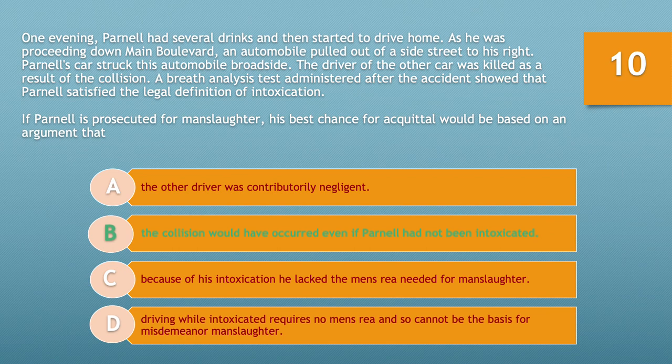If you chose option B — the collision would have occurred even if Parnell had not been intoxicated — you'd be correct. Please remember the four elements of a crime consist of a guilty act, a guilty mind, concurrence, and causation. In this case, Parnell had several drinks and drove home. An automobile pulled out of a side street and Parnell broadsided this vehicle, killing the other driver. We have a guilty act there.